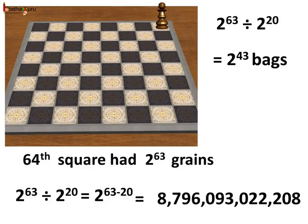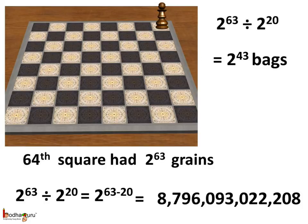Similarly, for the sixty-fourth square itself, he would need 2 to the power 63 divided by 2 to the power 20, which is equal to 2 to the power 43 bags. This is equal to 8 trillion, 796 billion, 93 million, and 22,208 bags.